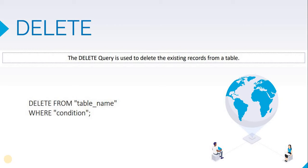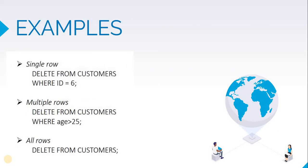Let us see some examples. If we want to delete a single row, we can run a query like: DELETE FROM customer table WHERE customer id is 6. If we want to delete multiple rows — say all customers who are less than 25 years old — we write: DELETE FROM customer table WHERE age is less than 25. And if we want to delete all the rows of the table, we simply write DELETE FROM customer table, with no condition needed.